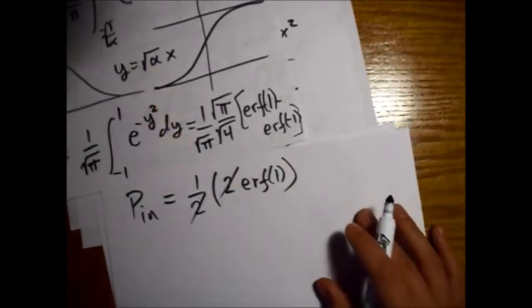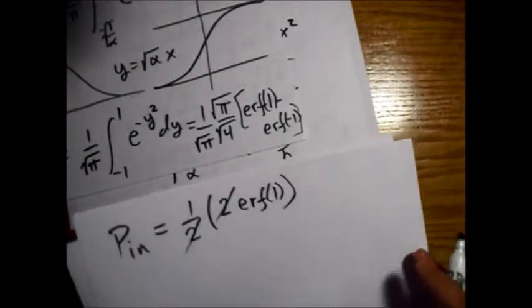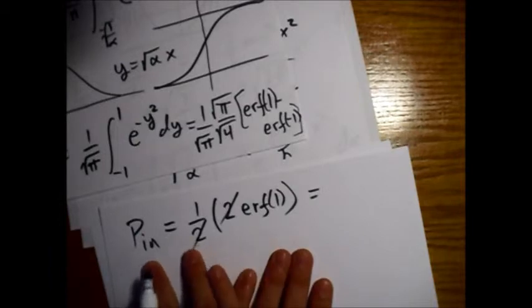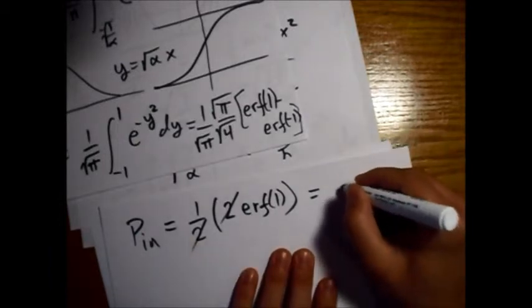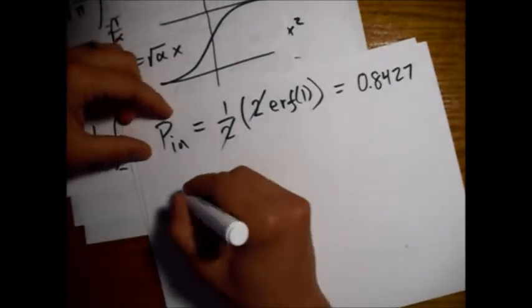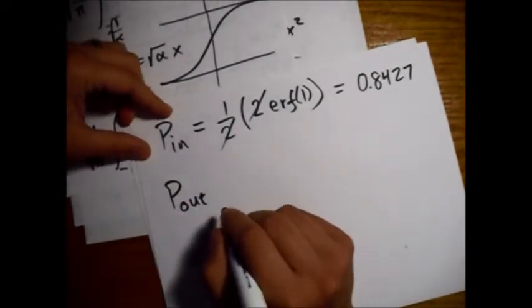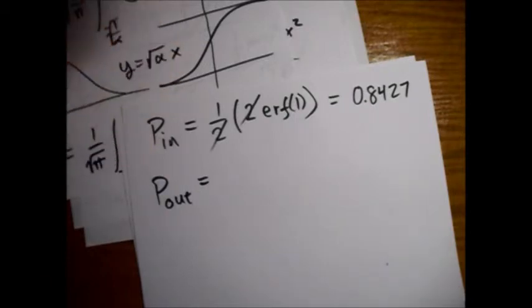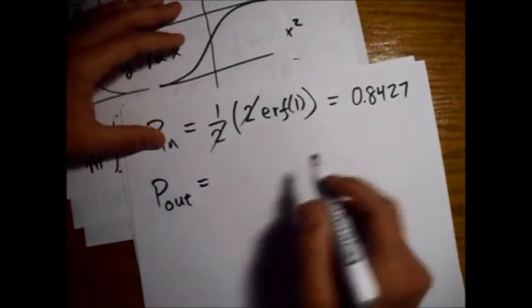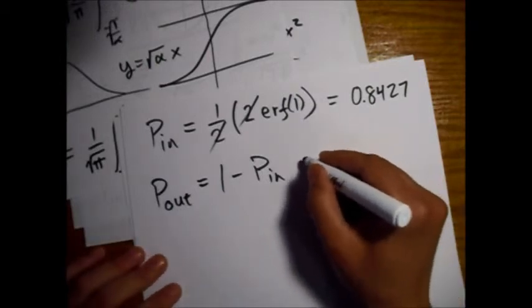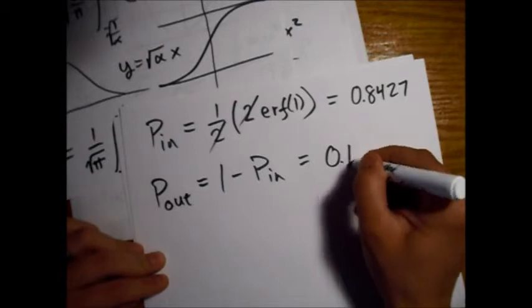This is the total probability of the particle being found inside the classical region. Looking up erf(1), we get approximately 0.8427. So there's an 84.3% chance of finding it inside the classically allowed region. Subtracting from 1 and rounding to three significant figures as Griffiths asks, we get 0.157.